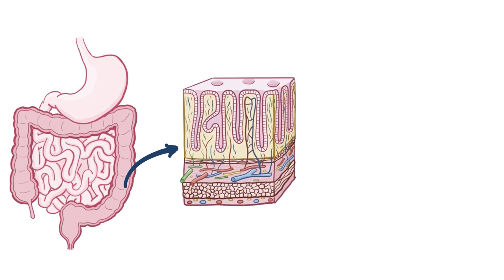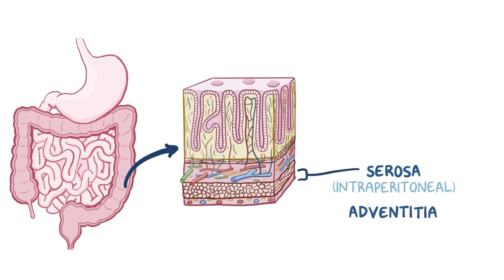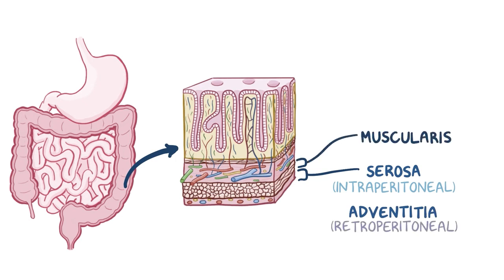The walls of the gastrointestinal tract are composed of four layers. The outermost layer is called the serosa for the intraperitoneal parts and the adventitia for the retroperitoneal parts. Next is the muscular layer, which contracts to move food through the bowel. After that is the submucosa, which consists of a dense layer of tissue that contains blood vessels, lymphatics, and nerves.